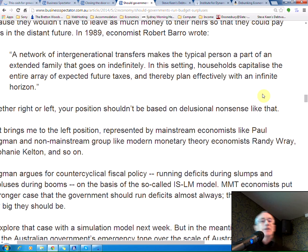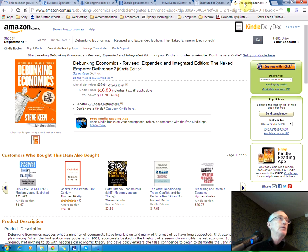A large part of the argument would say that if you had a government running a surplus now, that would stimulate the spending by the private individuals. His logic as to why a government running a surplus would stimulate spending is he assumes the existence of a network of intergenerational transfers which makes the typical person part of an extended family that goes on indefinitely. In the settings, households capitalise the entire array of expected future taxes and therefore plan effectively with an infinite horizon. If that sounds like delusional bullshit to you, that's because it is.